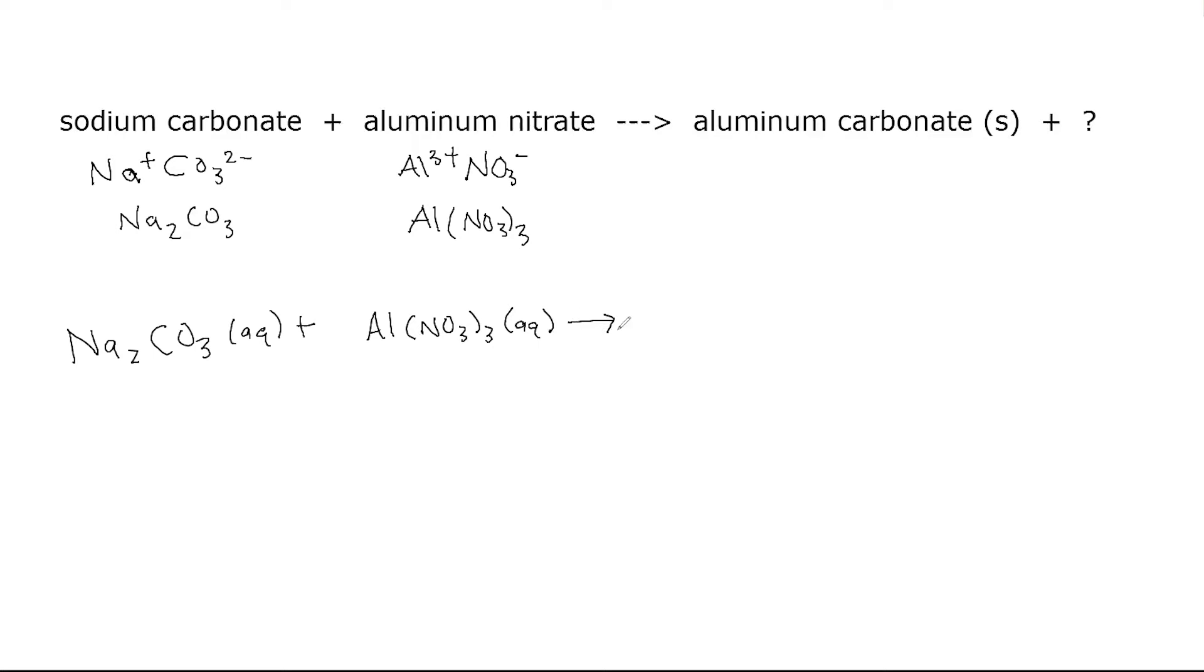This produces a precipitate, which is aluminum carbonate. Al is in column 3A, so it has a 3+ charge. Carbonate from page 245 is CO3 with a 2- charge. Swap and drop to get Al2(CO3)3. That's our precipitate.